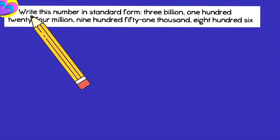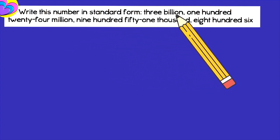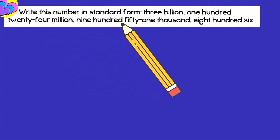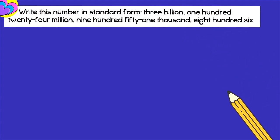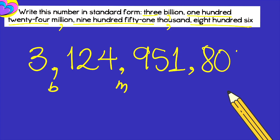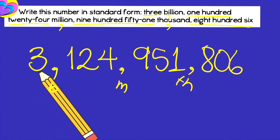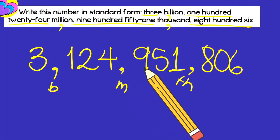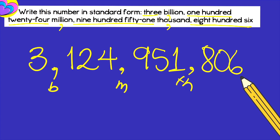Let's read this one — write this number in standard form: 3 billion. Billions! This is 3 billion, 124,951,806. So you write: 3,124,951,806. It sounded very long, but it's just like that. I'm sure you're a math expert by now.